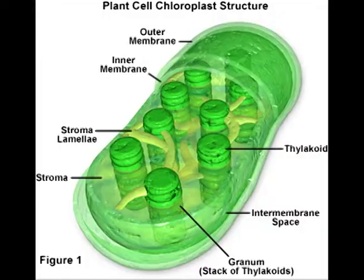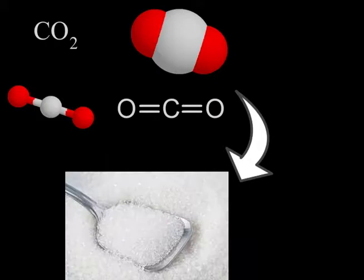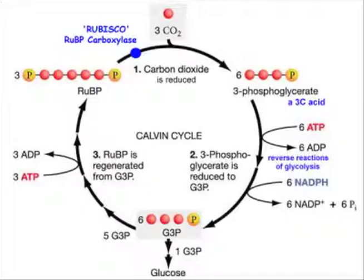Chlorophyll is a green pigment found in cyanobacteria and the chloroplasts of algae and plants. Carbon dioxide is converted into sugars in a process called carbon fixation.